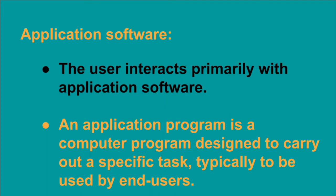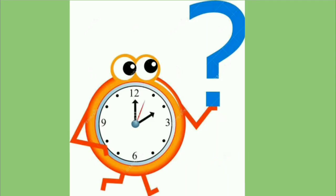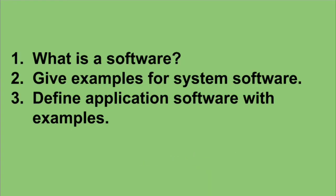An application program is a computer program designed to carry out a specific task, typically to be used by end users. Whatever task we need to perform, we open a specific software — that particular software is termed application software, and it is fully controlled by the system software. Examples of application software include MS Word, media player, and MS PowerPoint.